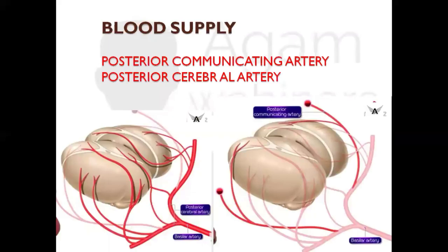Moving on to its blood supply: the thalamus receives blood supply from an important artery called the posterior cerebral artery and its branches. Also, the posterior communicating artery through its branches supplies some part of the thalamus. Remember two main arteries: the posterior communicating artery and the posterior cerebral artery. The posterior cerebral artery is a branch of the basilar artery.